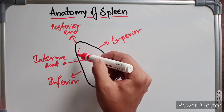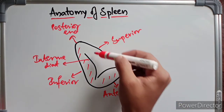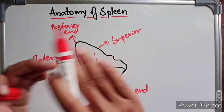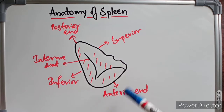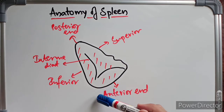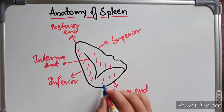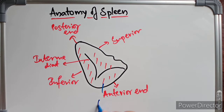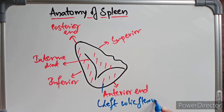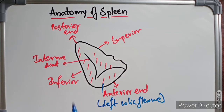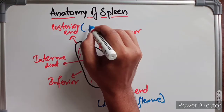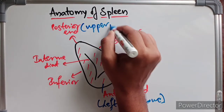There are two surfaces: the visceral surface is the one you see in the front, and the diaphragmatic surface is at the back. The anterior end is broad and related to the left colic flexure. The posterior end is narrow and pointed, related to the upper pole of the left kidney.